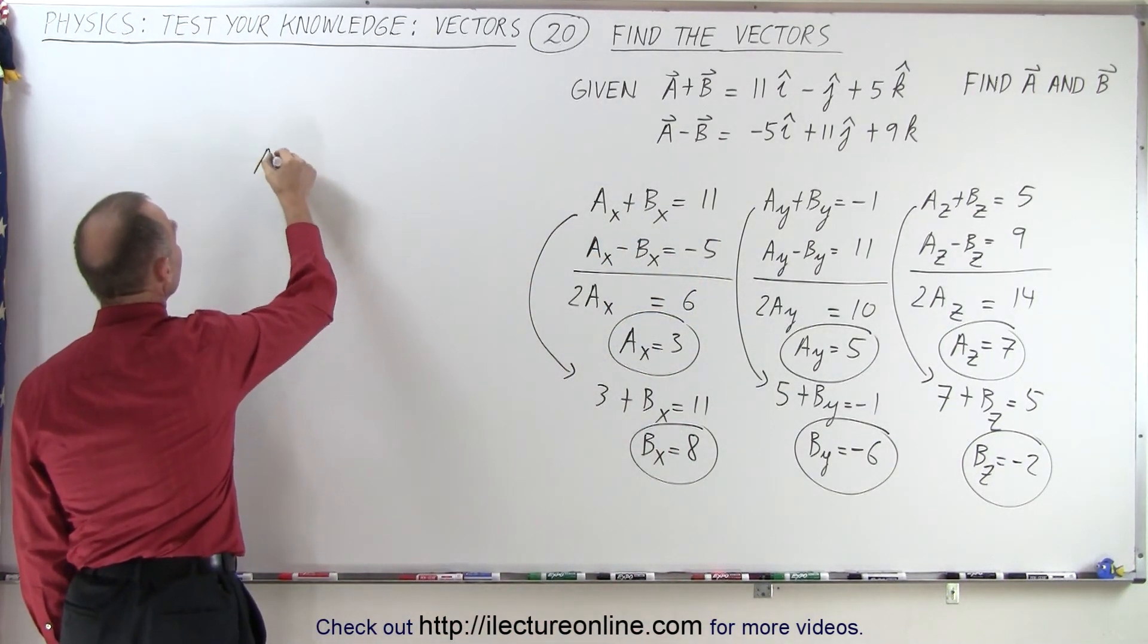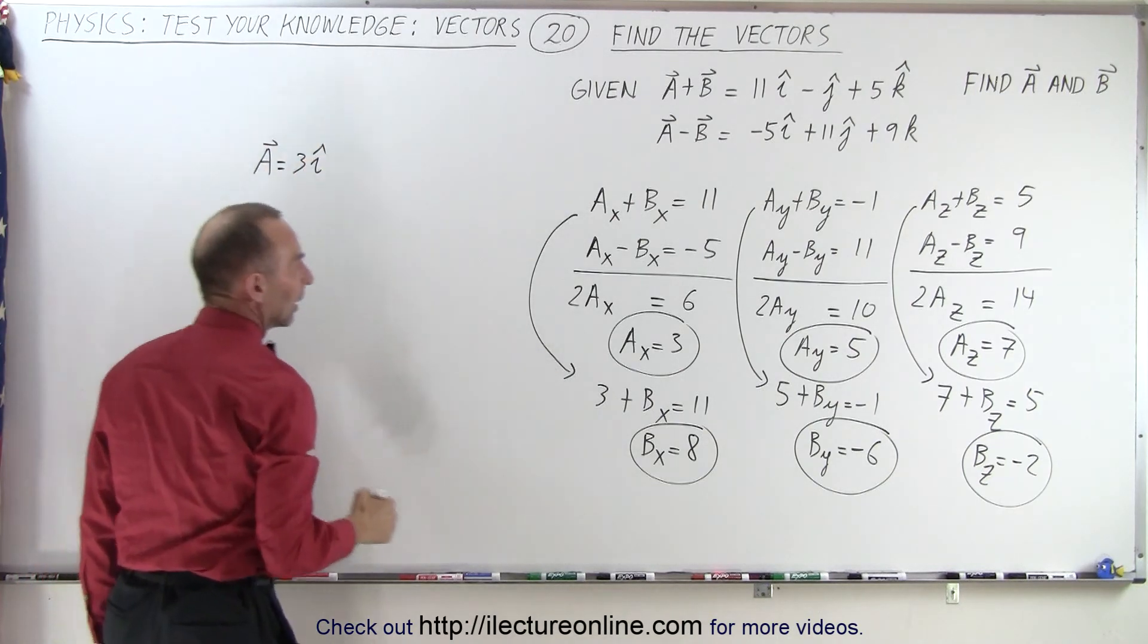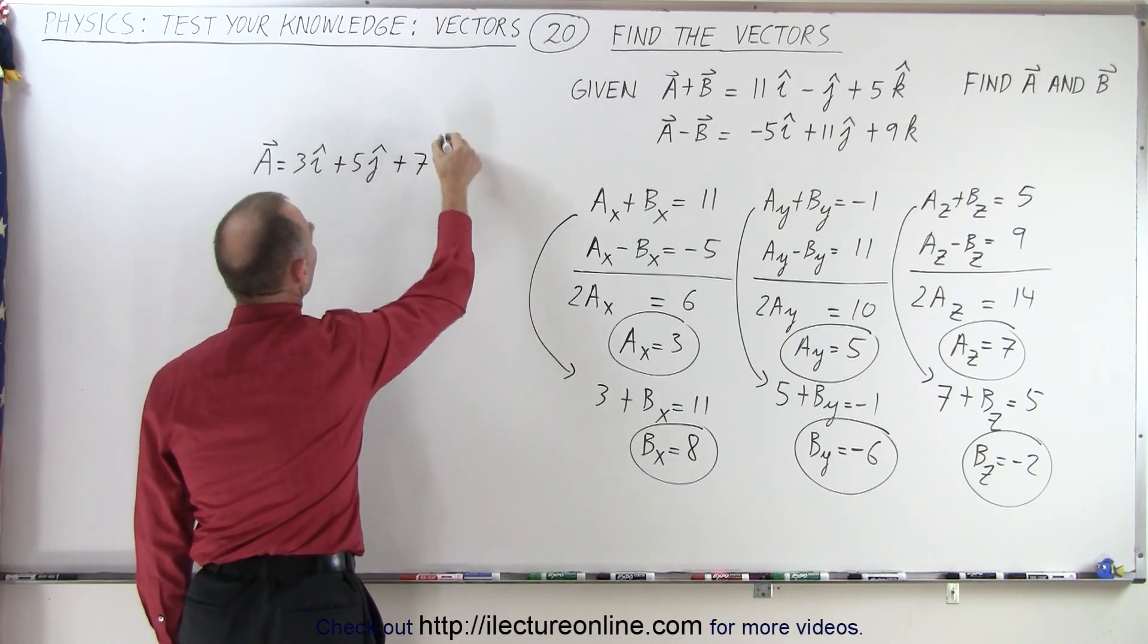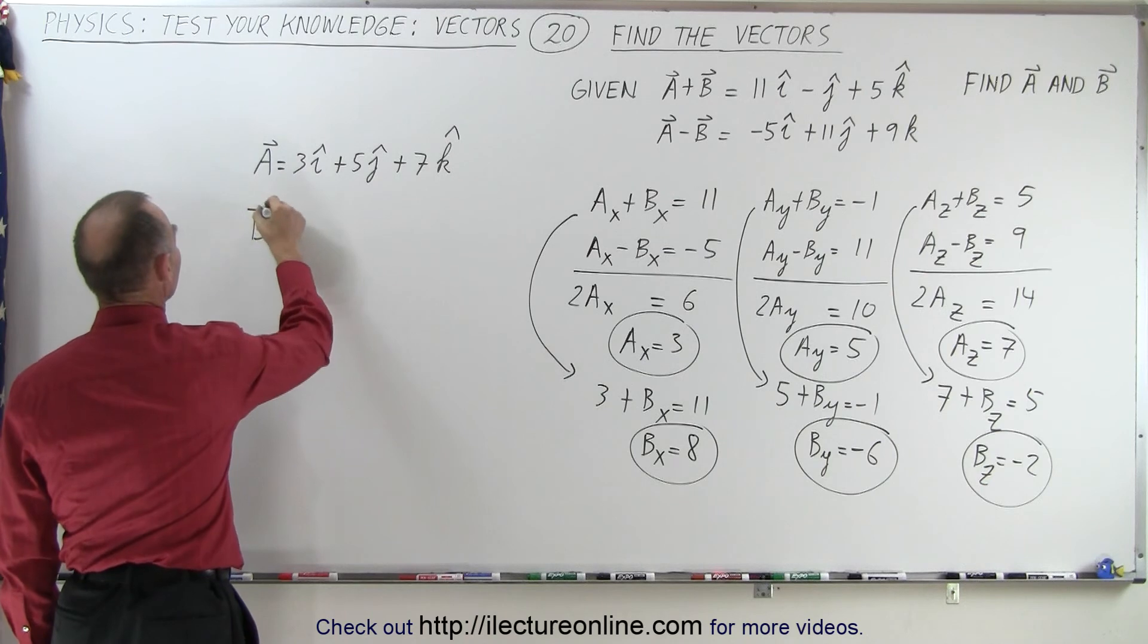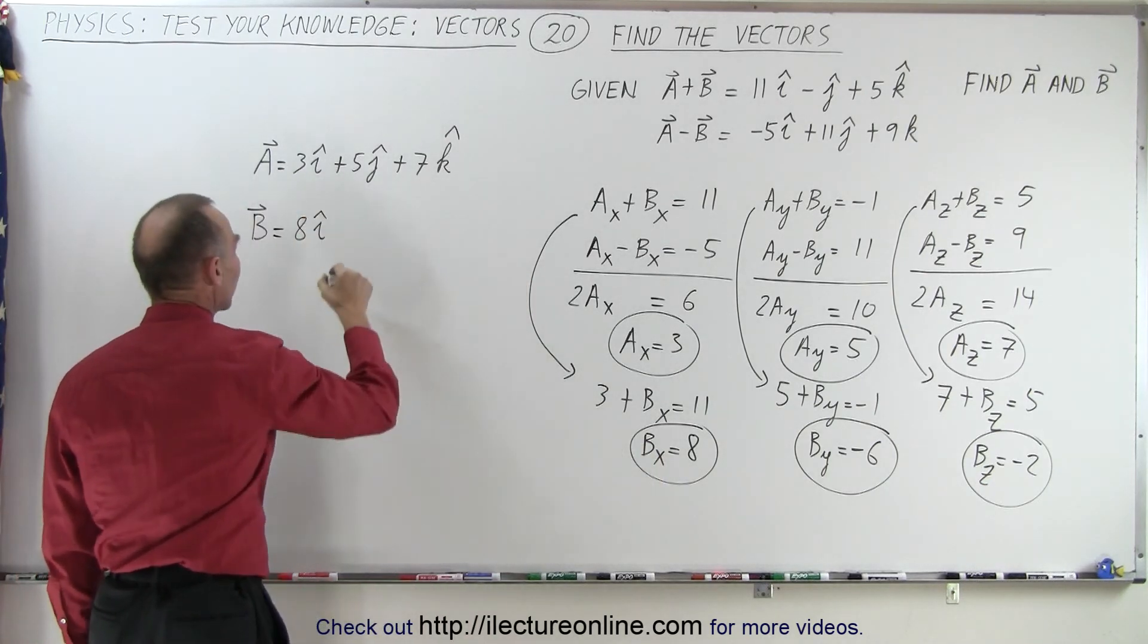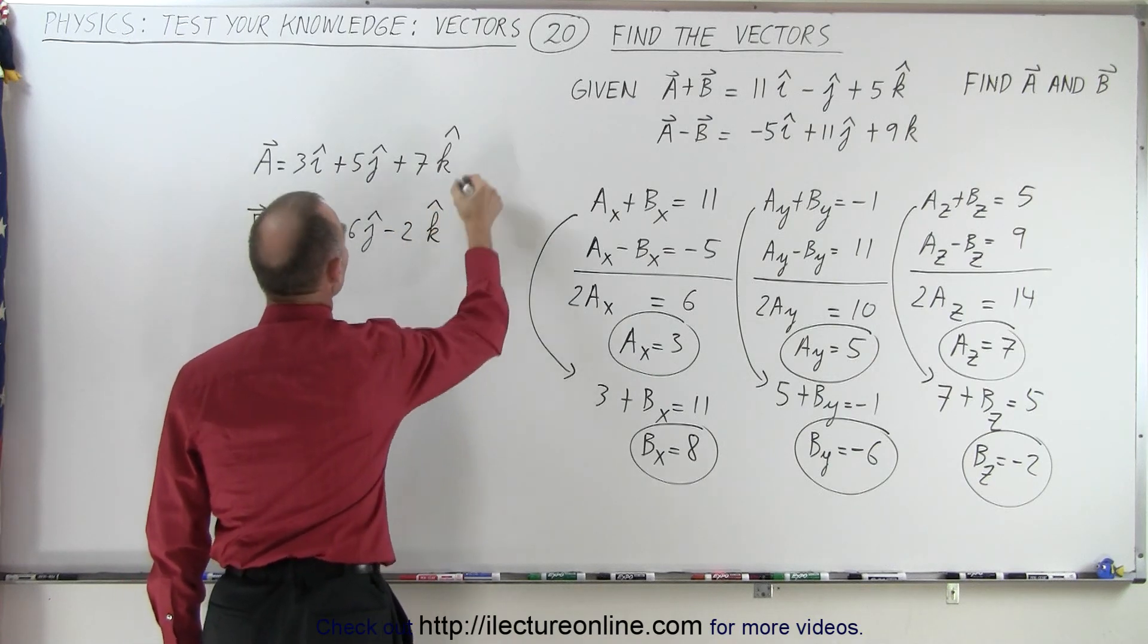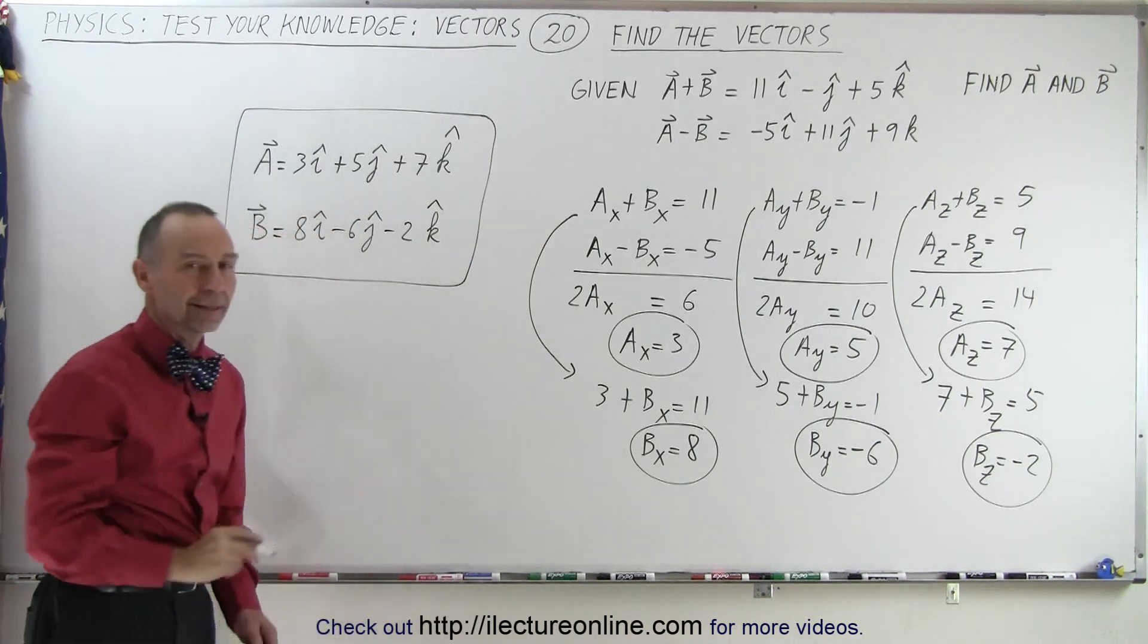I can say that a is therefore equal to a sub x, which is 3 in the i direction, a sub y, which is 5 in the j direction, and a sub z, which is 7 in the k direction. And now for vector b, that is equal to b sub x, that would be 8 in the i direction, minus 6 in the j direction, and minus 2 in the k direction. And so those are the two vectors a and b, that is how it's done.